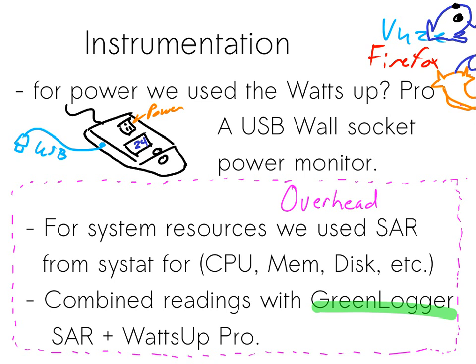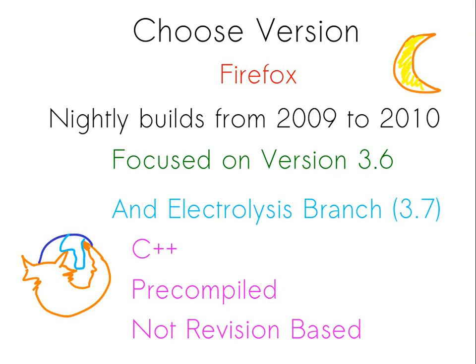To instrument the system, we use a Watts Up Pro - a USB power logger. We use that to record power use. We don't use ACPI or the laptop battery circuitry because that sometimes is a problem. I also use SAR and SYSTAP to record CPU, memory, and disk usage, and then combine both of these measurements in our Greenlogger software. That allows me to analyze and make models of, say, CPU and disk usage versus power. For Firefox, we chose nightly builds - all the nightly builds for the 3.6 branch from 2009 to 2010 - and also the builds for the electrolysis branch. Firefox provides these pre-compiled builds, which are an aggregate of the revisions during that day on that branch checked out and compiled. We did that because it's very expensive to compile Firefox.